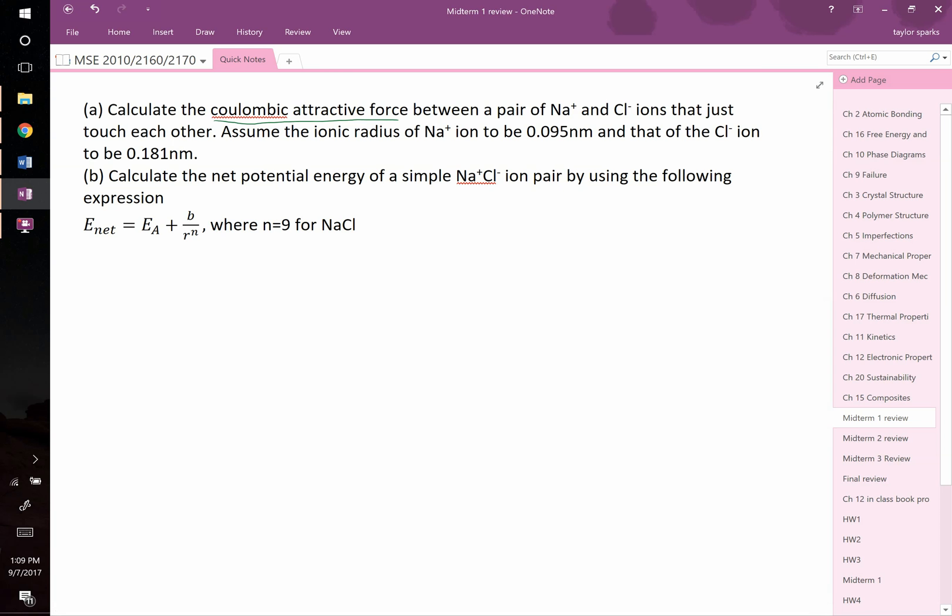And from physics, you probably saw an equation that looked like this. The attractive force between ions is equal to Q1 times Q2 over R squared, and this is all multiplied by K. When we talk about interatomic attractive forces, it's going to look very similar. We're going to write it as negative Z1 times Z2 multiplied by the charge of these electrons squared divided by 4 pi epsilon naught multiplied by the separation distance squared.